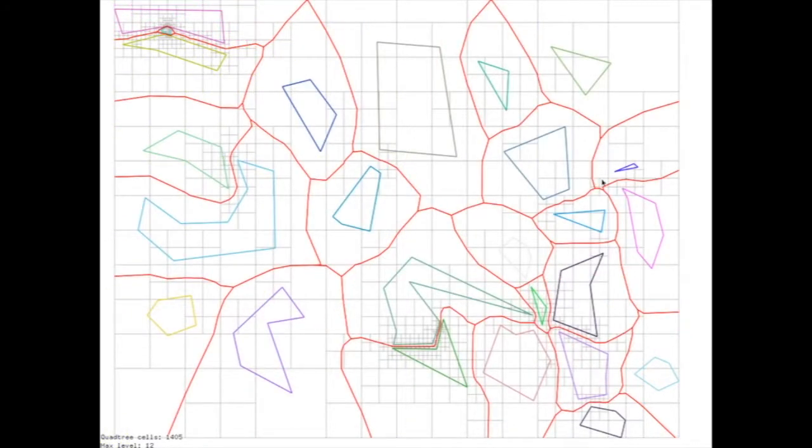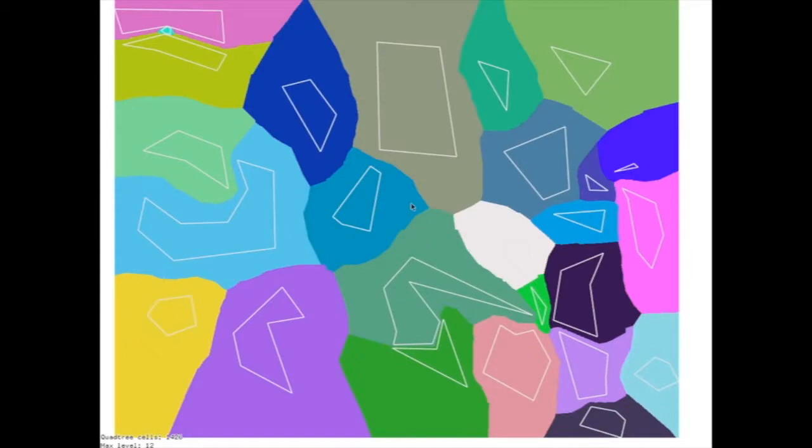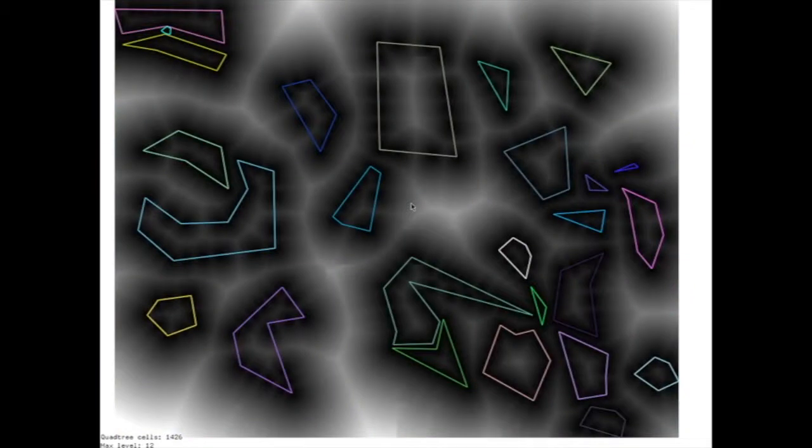Here, the generalized Voronoi diagram is shown in red. This representation shows each cell colored according to its contained object. This is the corresponding distance field.